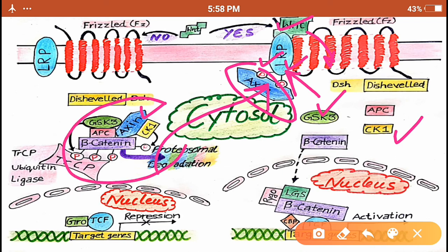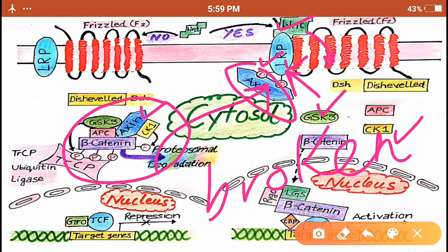The whole complex is broken. This is disintegrated. This is disrupted. These enzymes or the other proteins, they were functioning when they were together. Now this is broken. The enzyme CK1 and the GSK3 is not able to phosphorylate beta-catenin.